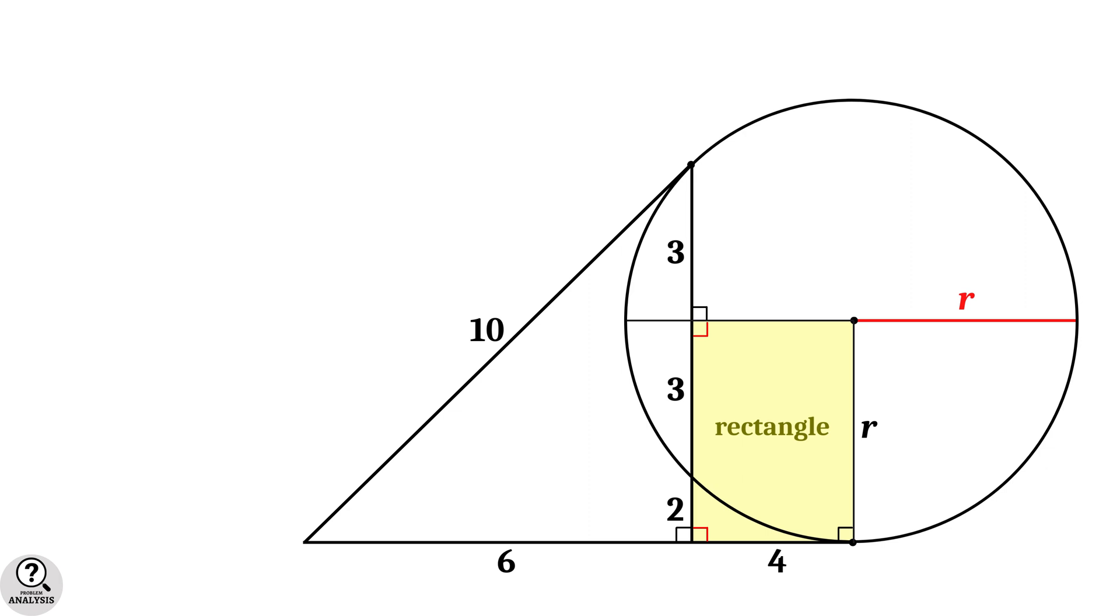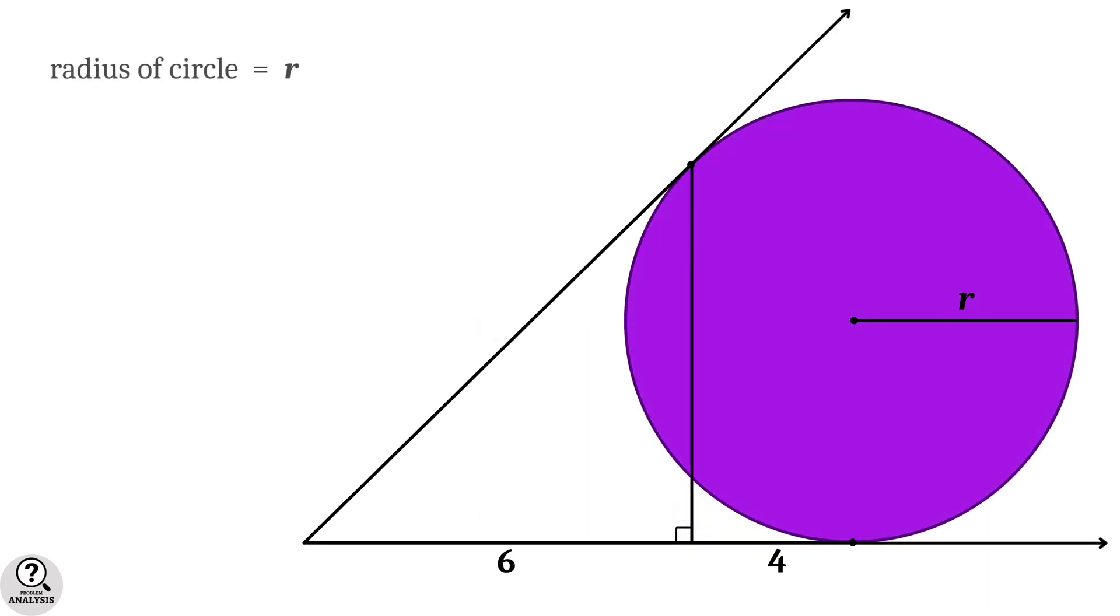Now as we know in a rectangle the opposite sides are equal. So consider these two opposite sides. That implies r equal to 3 plus 2 that is equal to 5. So, in the diagram of our problem, radius of the circle r is equal to 5 units.